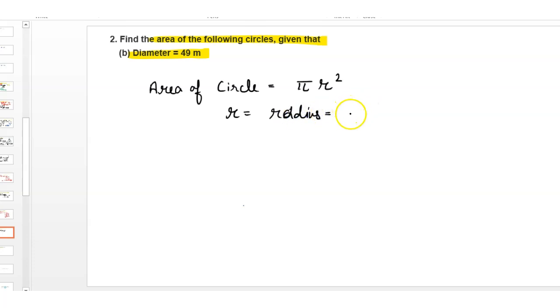Radius is equal to diameter divided by 2, which is equal to 49 divided by 2. Now substitute this value in the formula.